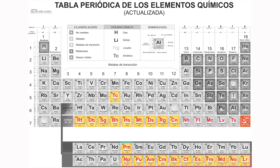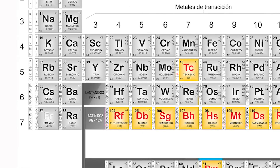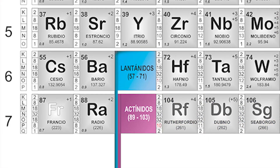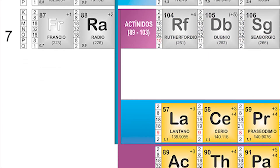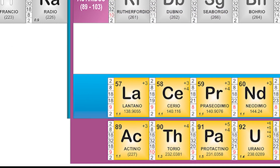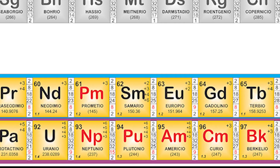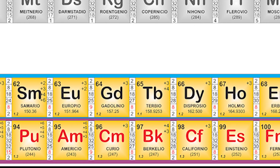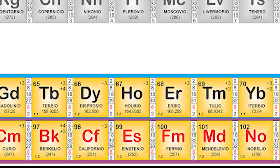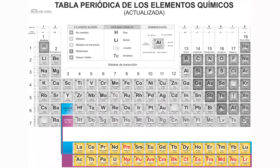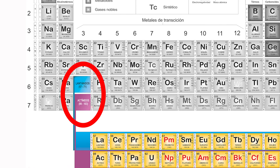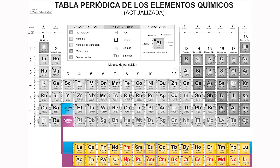Los elementos que observan en la parte baja de la tabla son la serie de lantánidos y la serie de actínidos. Estos elementos son radiactivos, es decir, desprenden energía por sí mismos y cada serie comparte propiedades muy similares. Estas dos hileras deberían estar aquí, pero por razones de espacio y por la similitud que presentan, fueron apartados. Si no, la tabla periódica se vería así.